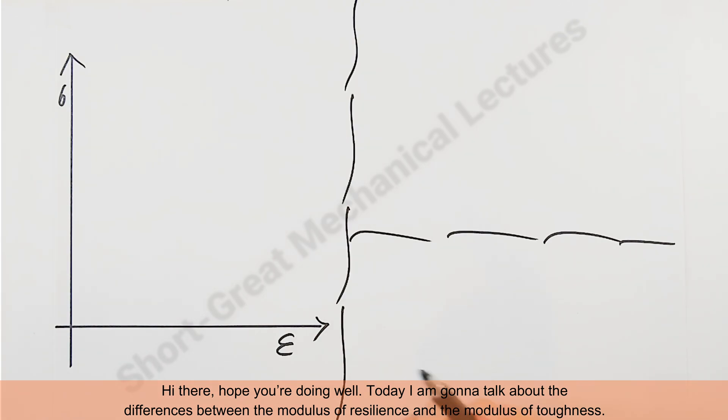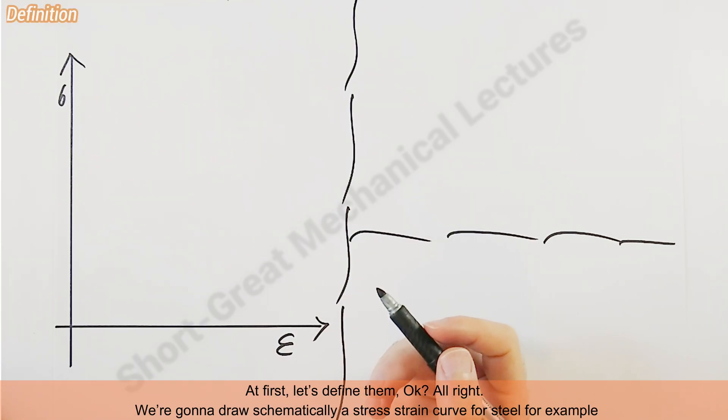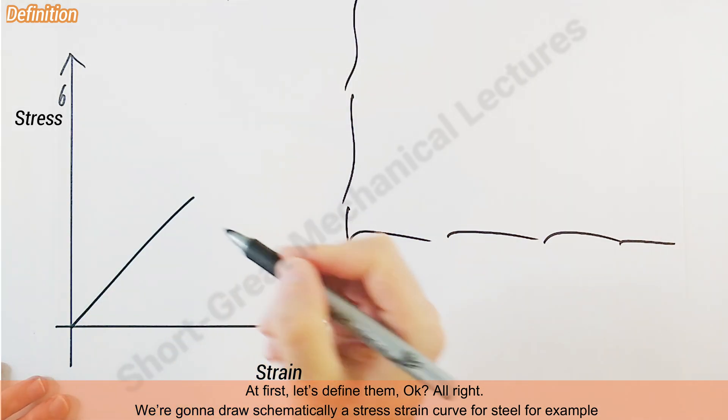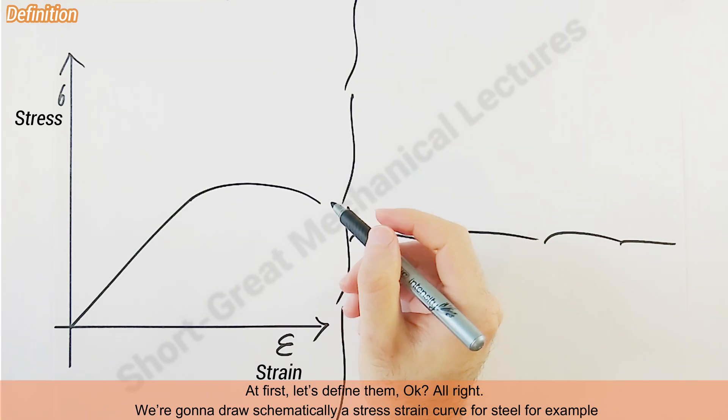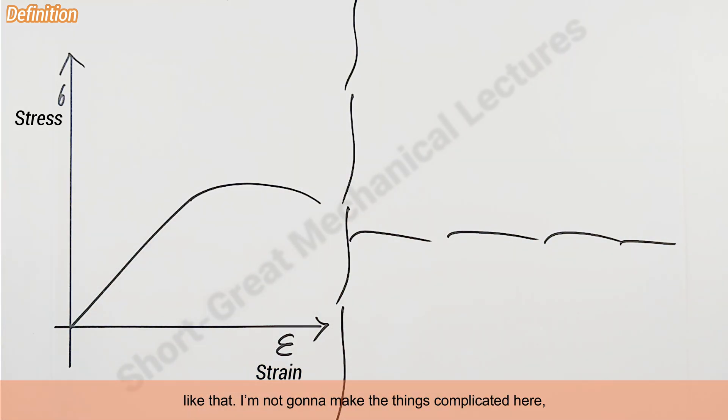Hi there, hope you're doing well. Today I'm going to talk about the differences between the modulus of resilience and modulus of toughness. At first, let's define them. We're going to draw a schematic stress-strain curve for a steel, for example, like that.